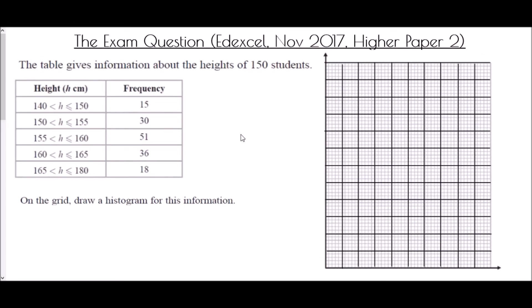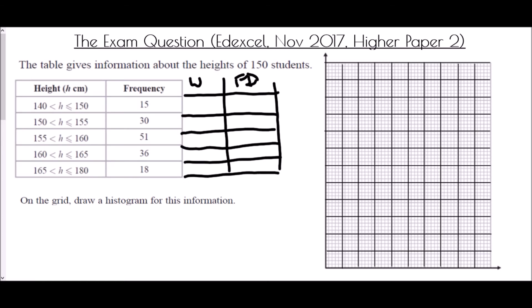Now we're going to end with the exam question. This came from the Edexcel paper in November 2017, higher paper 2. The table gives information about the heights of 150 students. On the grid draw a histogram for this information. Once again, all we've been given here is the actual groups and their frequencies, so we do need to add in the extra information. We're going to need the width and the frequency density. The width of the first group is from 140 to 150, so that is a width of 10. The next one is 150 to 155, so that is a width of 5. Then 155 to 160, a width of 5. 160 to 165, a width of 5, and 165 to 180 is 15.